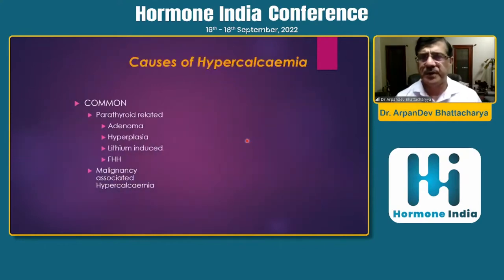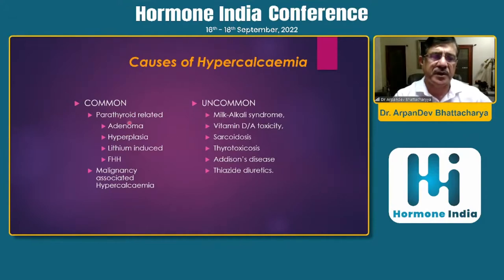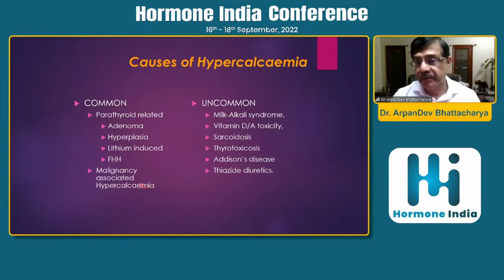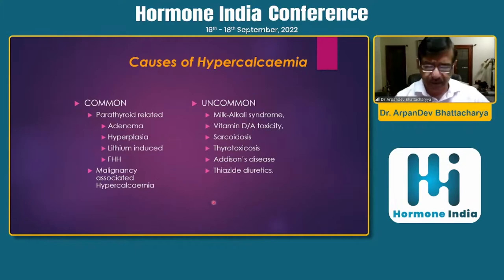Causes can be classified as common and uncommon. The common causes are PTH-related — adenoma, hyperplasia, or conditions like lithium use or familial hypercalcemia. The second common cause is malignancy-associated hypercalcemia. Uncommon causes include milk-alkali syndrome, vitamin A toxicity, and vitamin D toxicity — which we are now seeing more due to overzealous supplementation. Sarcoidosis, Addison's disease, and thiazides are also uncommon.